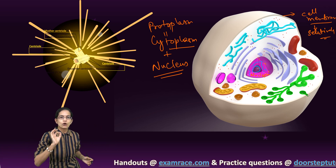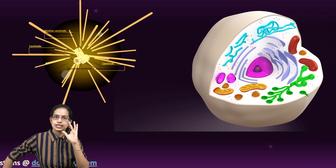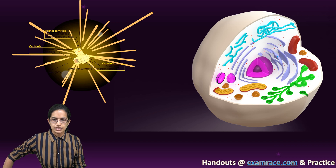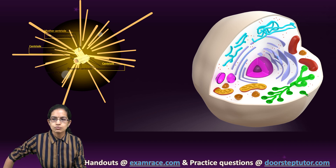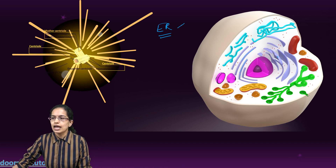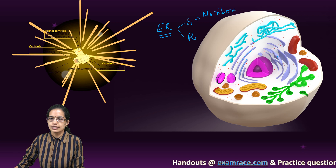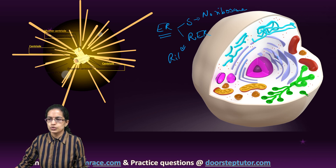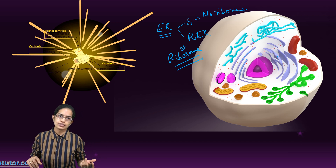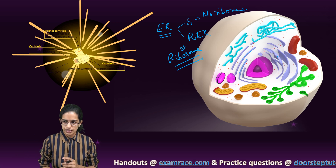Understanding the different organelles of the cell is very important. Moving forward with the other organelles: here we have the endoplasmic reticulum — the rough endoplasmic reticulum and the smooth endoplasmic reticulum. Endoplasmic reticulum is a supportive structure which provides support to the cell. The smooth endoplasmic reticulum has no ribosomes, while the rough endoplasmic reticulum has ribosomes attached to it. The ribosomes are responsible for the synthesis of proteins, and the smooth endoplasmic reticulum is responsible for the synthesis of fats and lipids.